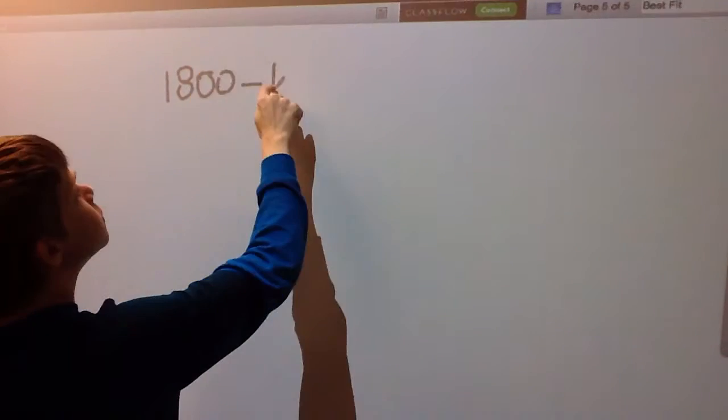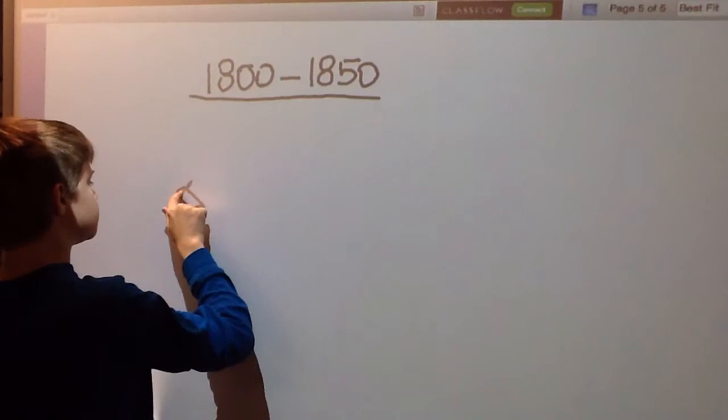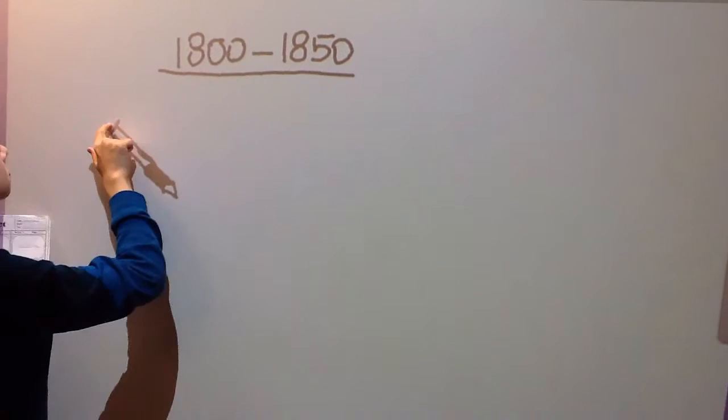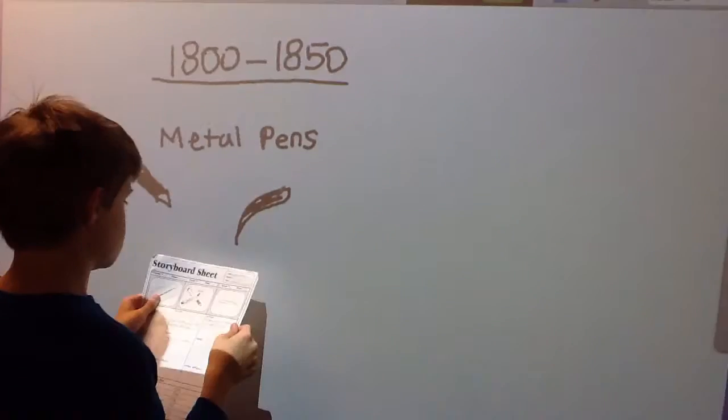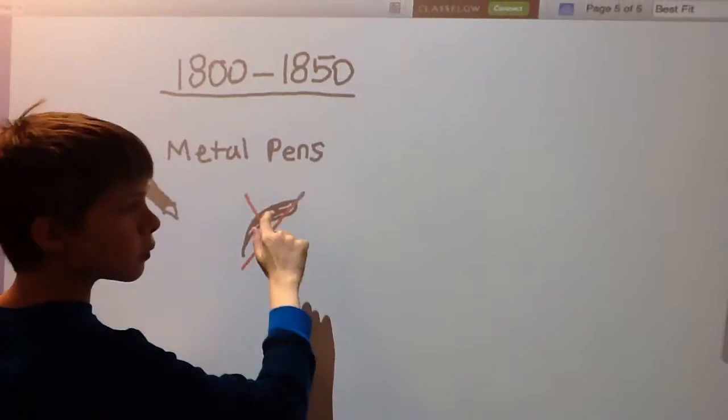In the 1800s through the 1850s, a metal pen was created in 1803, but the pen was not commercially exploited. In the 1860s, metal nibs replaced quill pens.